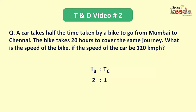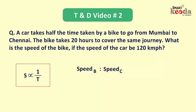Now, following the relationship between speed and time when the distance is constant, we know that time is inversely proportional to speed. Therefore, the ratio of speed of bike to speed of car will be 1:2, which is the inverse of the time ratio of 2:1.